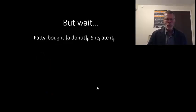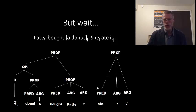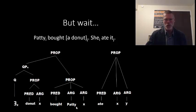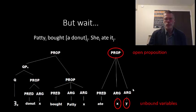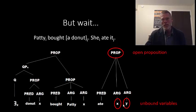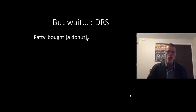But remember, this next example we really can't handle very well in traditional logic. We want this y to be bound to this x, and that x we want to be bound to Patty. It doesn't really work that way — these are unbound variables, meaning this is an open proposition. We don't have a good solution in logic except to say these are treated more like constants rather than bound variables. Well, in discourse representation structure, this is fairly straightforward. We start with our first sentence.